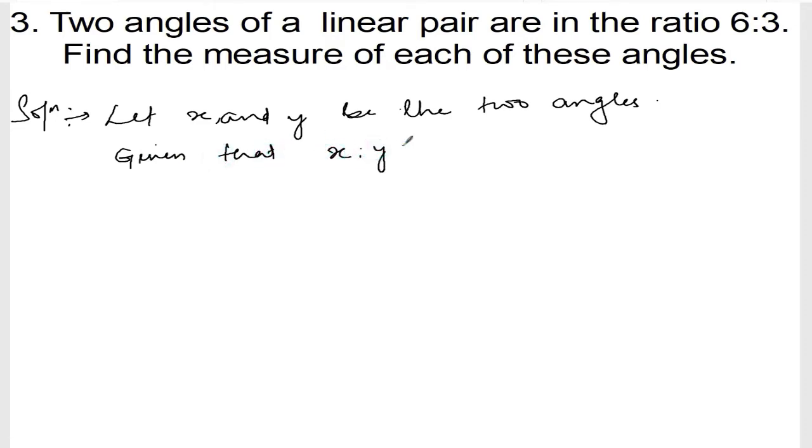Given that x is to y is equal to 6 is to 3, I can write x divided by 6 equals y divided by 3 equals k. From here, x is equal to 6k and y is equal to 3k. This is equation 1 and this is equation 2.